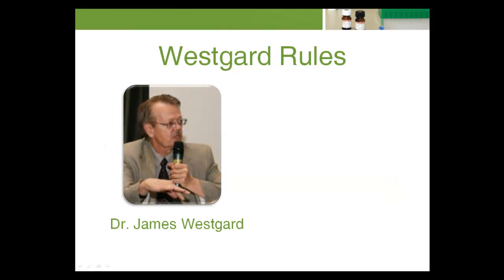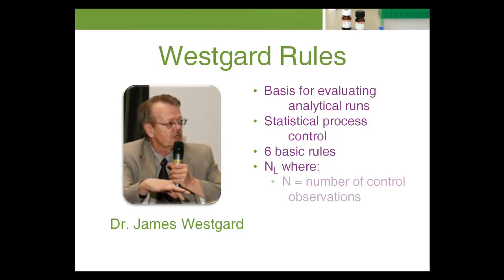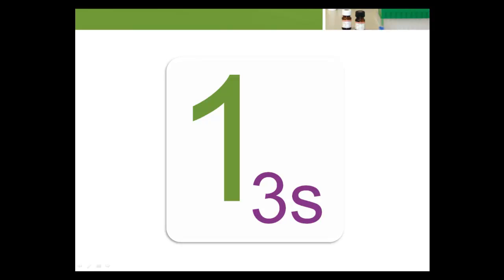In 1981, Dr. James Westgard of the University of Wisconsin published an article on laboratory quality control that set the basis for evaluating analytical run quality for medical laboratories. The elements of the Westgard system are based on principles of statistical process control used in industry nationwide since the 1950s. There are six basic rules in the Westgard scheme. These rules are used individually or in combination to evaluate the quality of analytical runs. Westgard devised a shorthand notation for expressing quality control rules. Most rules can be expressed as NL, where N represents the number of control observations to be evaluated and L represents the statistical limit. Thus, 1-3s represents a control rule violated when one control observation exceeds the positive-negative 3s control limits.